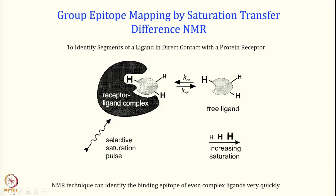Now I will briefly discuss group epitope mapping by saturation transfer difference. The idea is to identify the segment of the ligand that directly interacts with the protein or receptor. Using the same STD concept, suppose this is my ligand and this is the receptor. The receptor is a bigger molecule, the ligand is smaller. We again saturate the receptor molecules and look at the effect of that saturation on the small molecule. The receptor and protein are in exchange K-on and K-off.